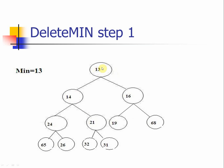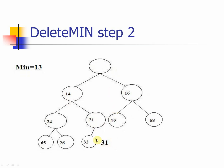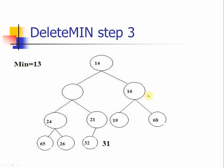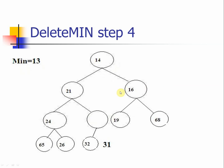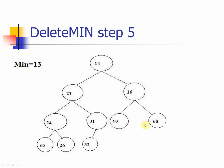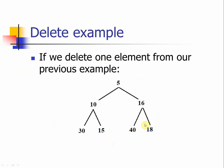Finding that 14 is the smaller child, so we swap with that. Then 21 is smaller, so we swap with that. Now compare 31 and 32 — we don't need to swap at all. That is how we do the delete operation. We remove the space, put 31 at the root, compare with 14 and 16, swap with the smaller child, then compare again — and if the node is smaller than both children you can stop the operation.